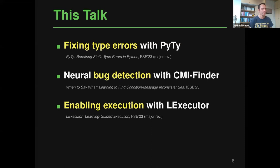After this general introduction, I want to go deeper into three pieces of work from my group. The first is on fixing type errors in Python, then I'll talk about bug detection using neural networks, and finally about some recent work on enabling execution.